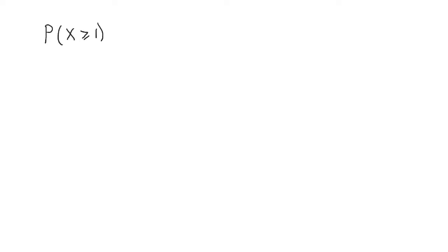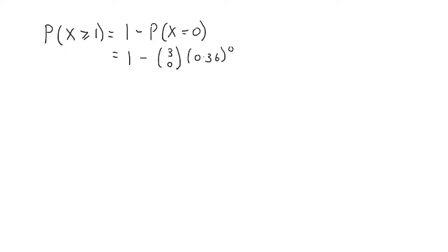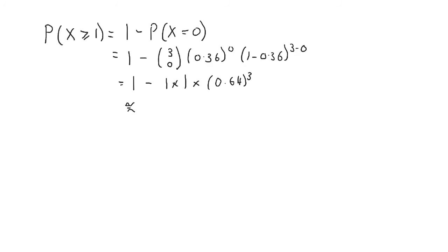To calculate this: P(X ≥ 1) = 1 − P(X = 0) = 1 − (3 choose 0) × 0.36⁰ × (1 − 0.36)³. Since 3 choose 0 is 1 and 0.36⁰ is 1, this simplifies to 1 − 0.64³, which is approximately 0.74.